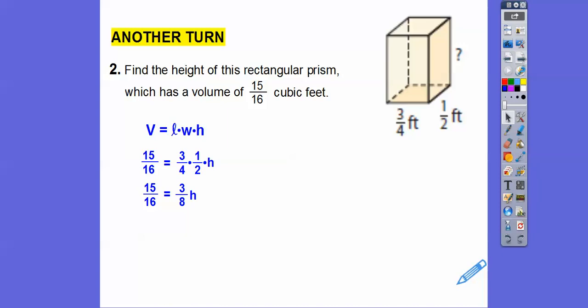And to get rid of 3/8, we multiply it by its reciprocal or its inverse, 8/3. And then what that does is it's going to cancel. The 8s are going to cancel, the 3s are going to cancel. Over here, 3 goes into 15 five times, 8 goes into 16 two times. So we're left with all that cancellation, so we get 5/2 equals h.